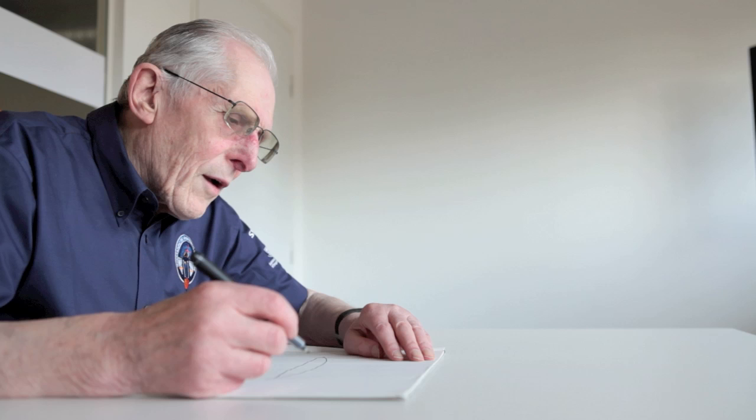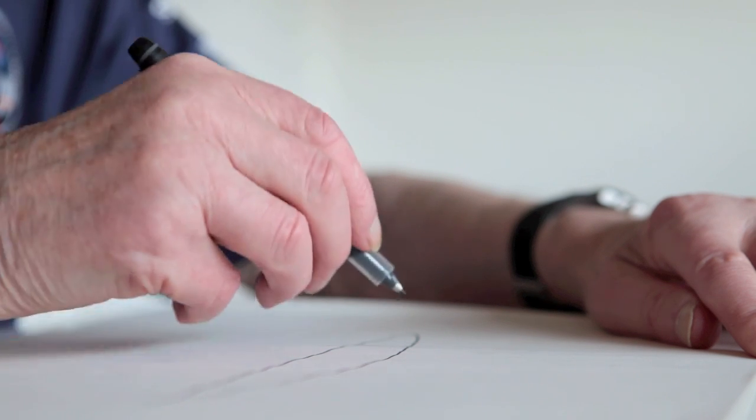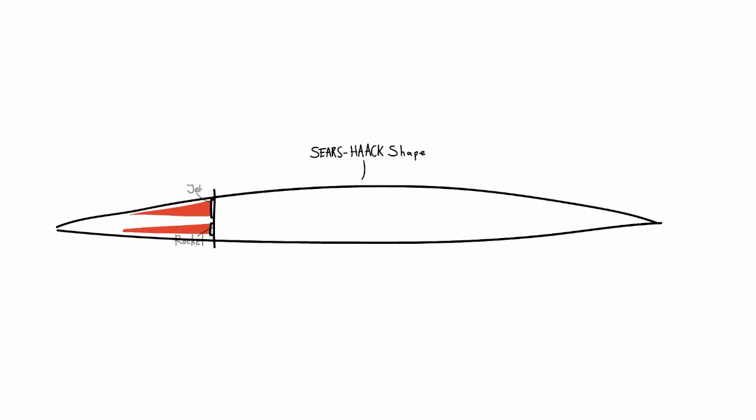For instance, we need to accommodate jet engines and rocket engines, so I'll need to cut the back end off so that the jet e-flux and the rocket e-flux can be accommodated.